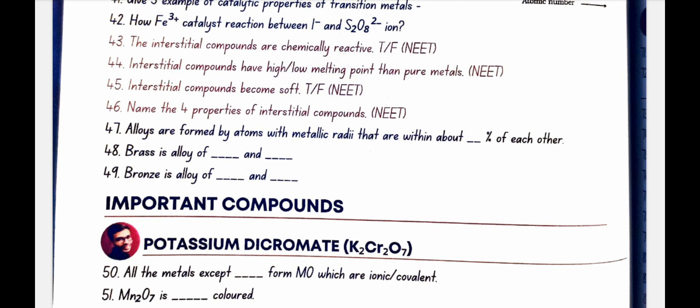Alloys are formed by atoms with metallic radii that are within about 15% of each other. Brass is an alloy of copper and zinc. Bronze is an alloy of copper and SN.